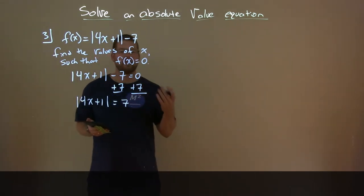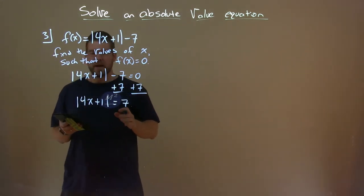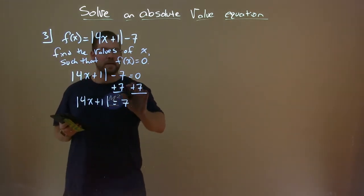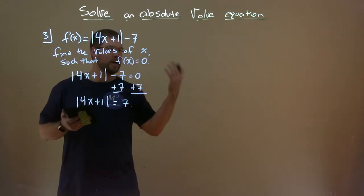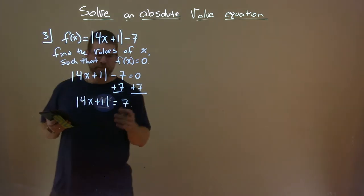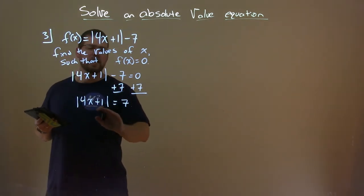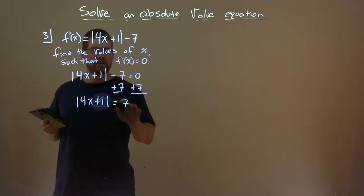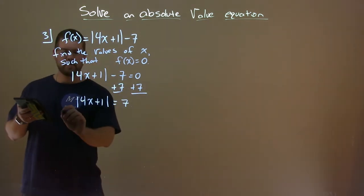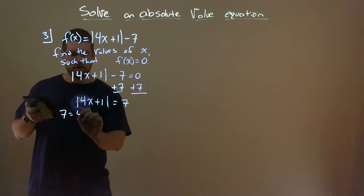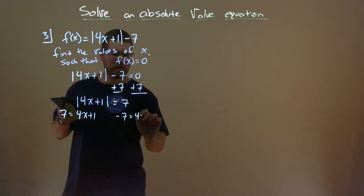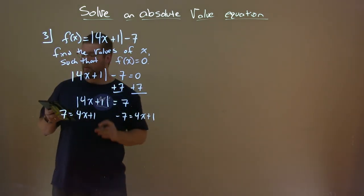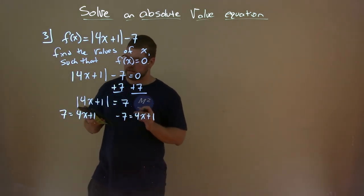So, where do we go from there? Well, since we have the absolute value here equals 7, we need to separate this similarly like we took a square function. Similarly, we need to set what's inside equal to 7 and negative 7. So, let's do it like this. 7 equals 4x plus 1, and negative 7 equals 4x plus 1, and we're going to solve each part individually.